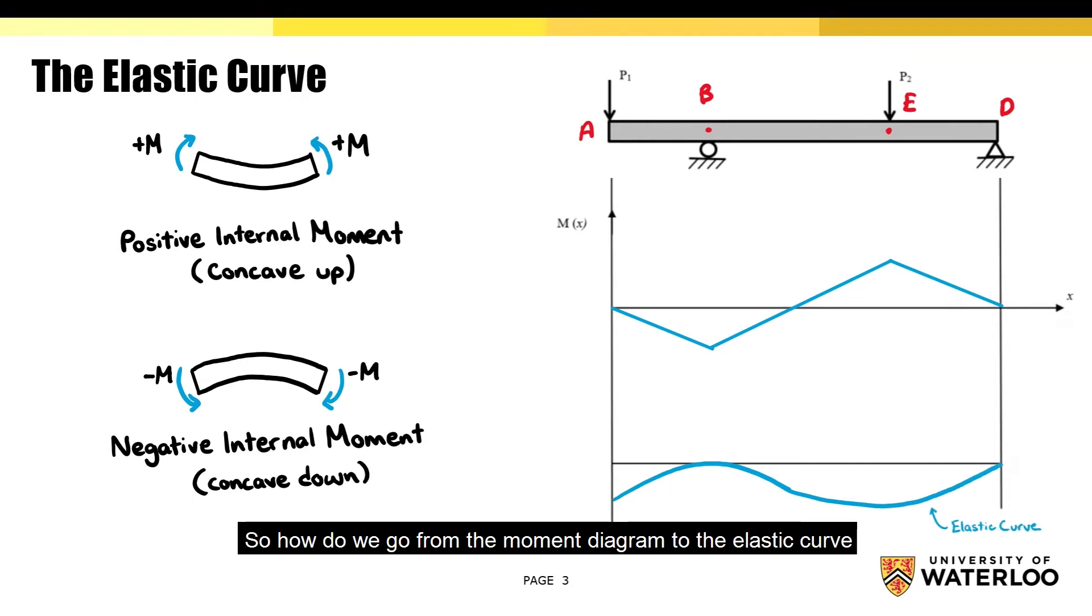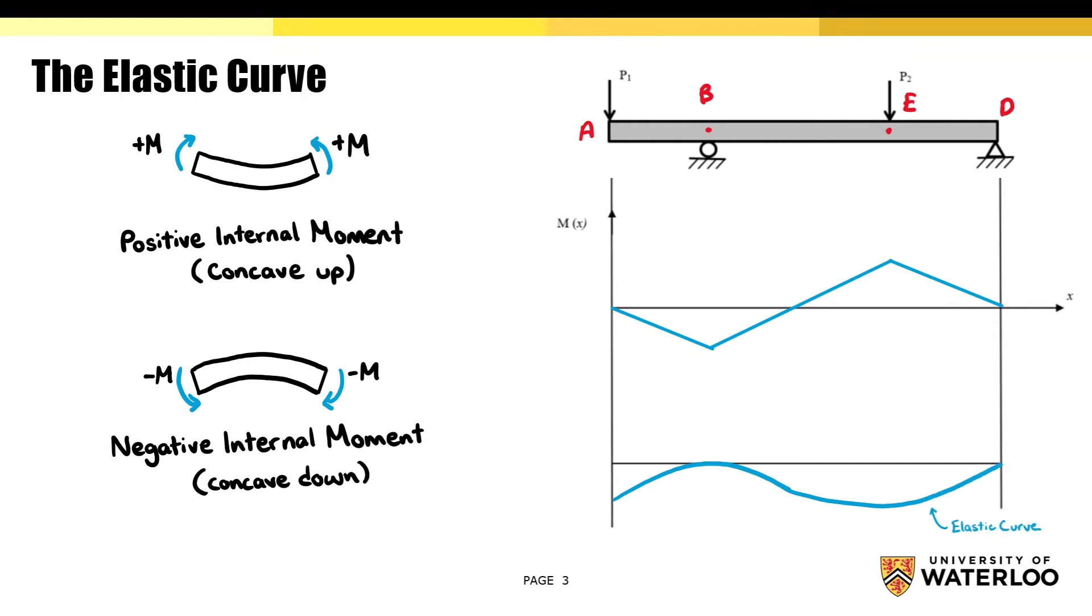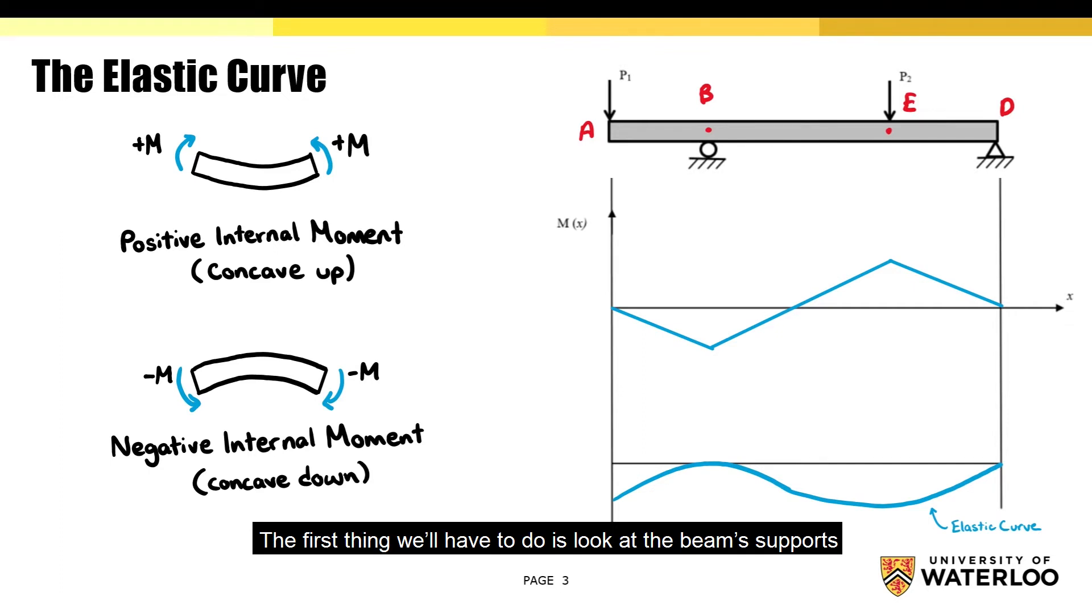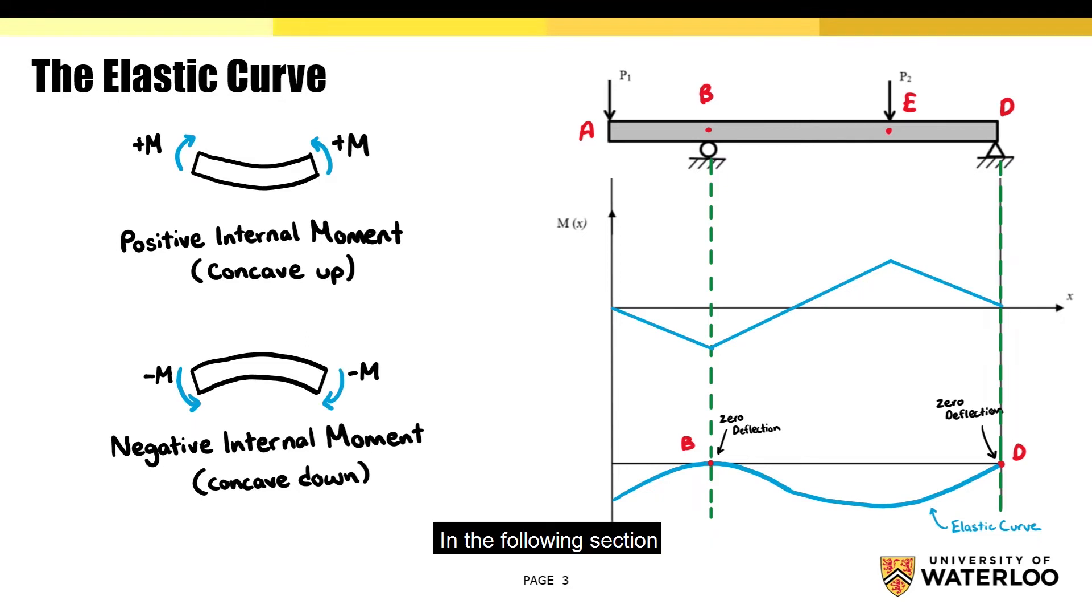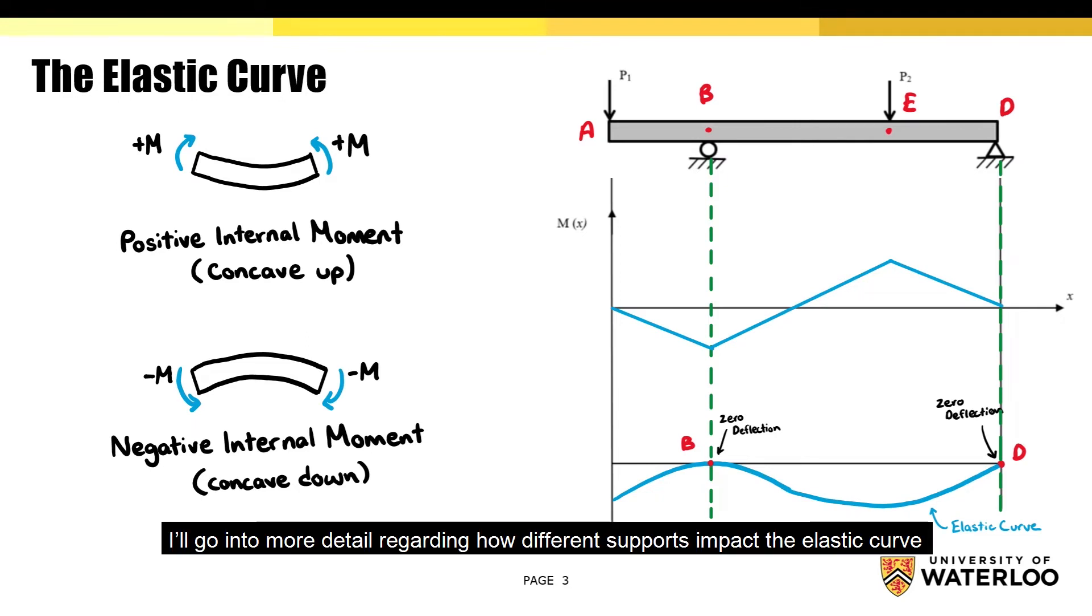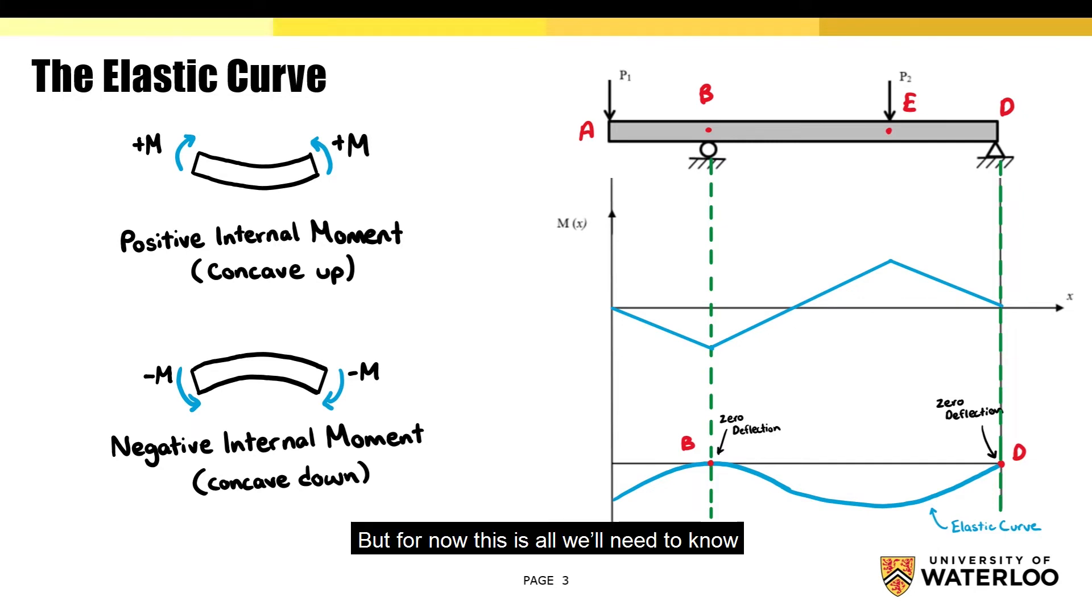So how do we go from the moment diagram to the elastic curve? The first thing we'll have to do is look at the beam supports. This particular beam has a fixed and roller support at points B and D respectively. So that means the vertical displacement at these points is zero. In the following section, I'll go into more detail regarding how different supports impact the elastic curve. But for now, this is all we'll need to know.